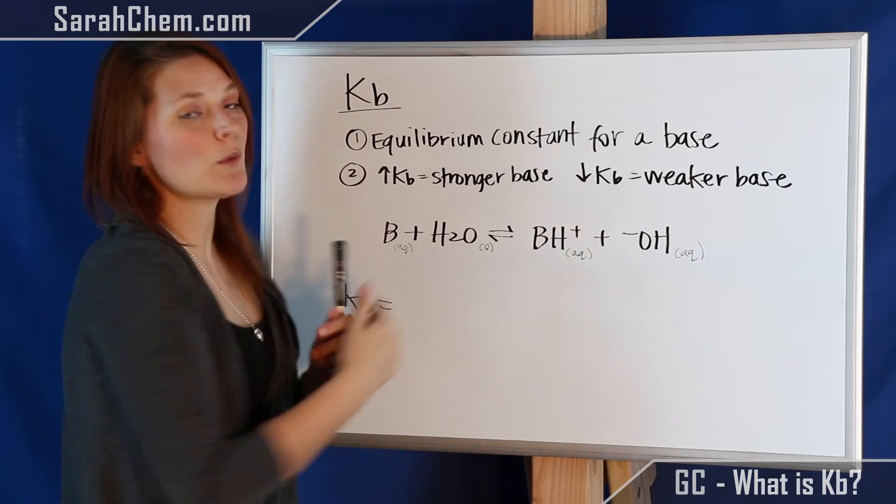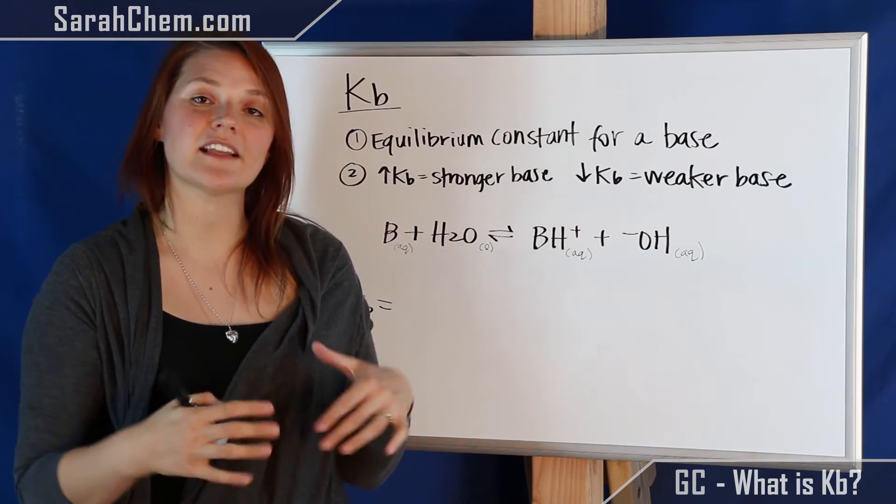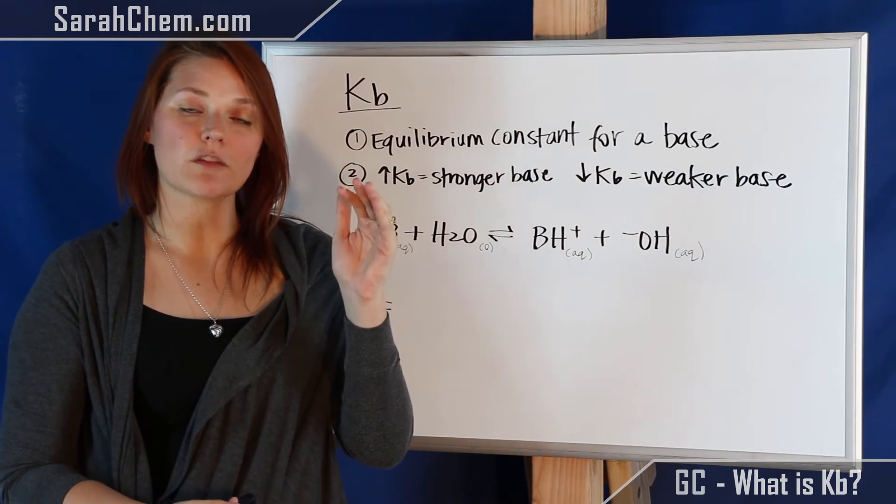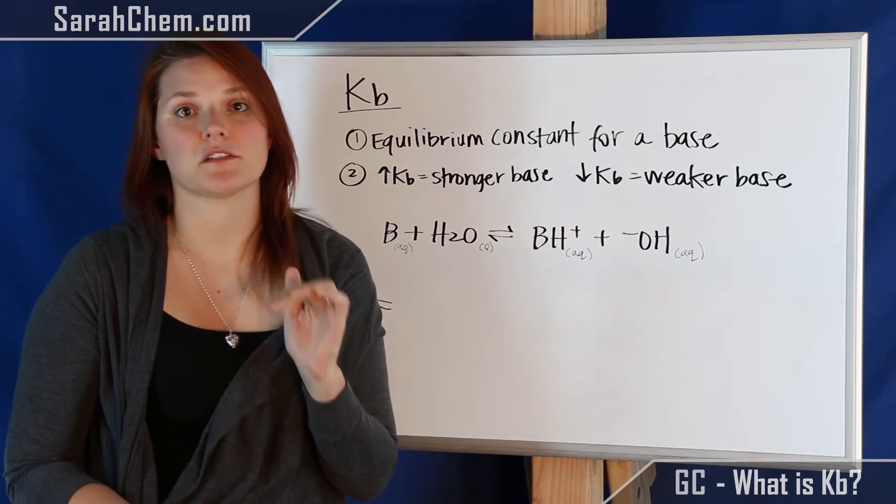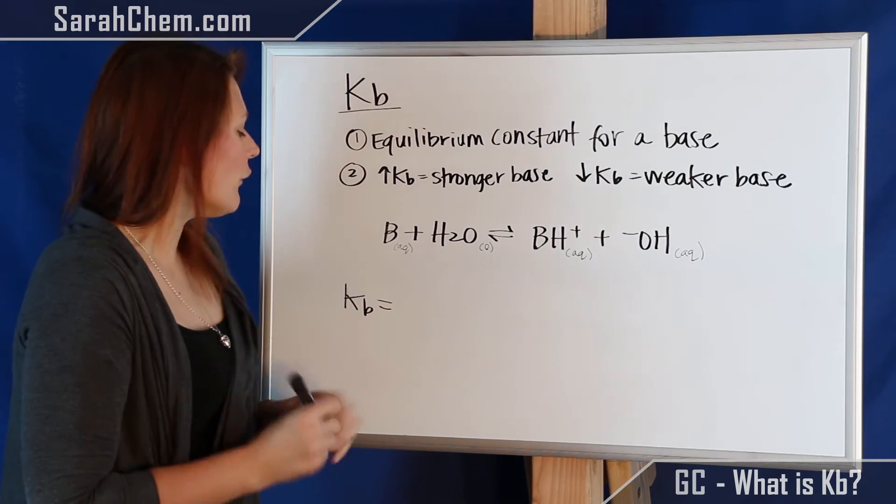So now this has an equilibrium expression for Kb, and as all Kb's go, it's going to be the concentration of the products divided by the concentration of the reactants. So if we take a look at this,